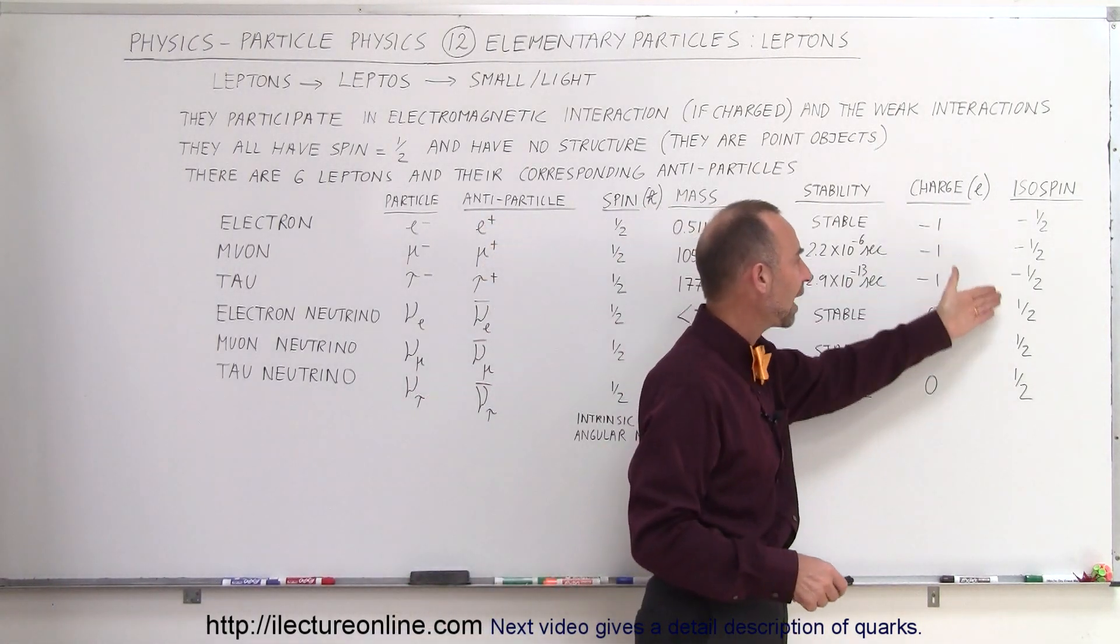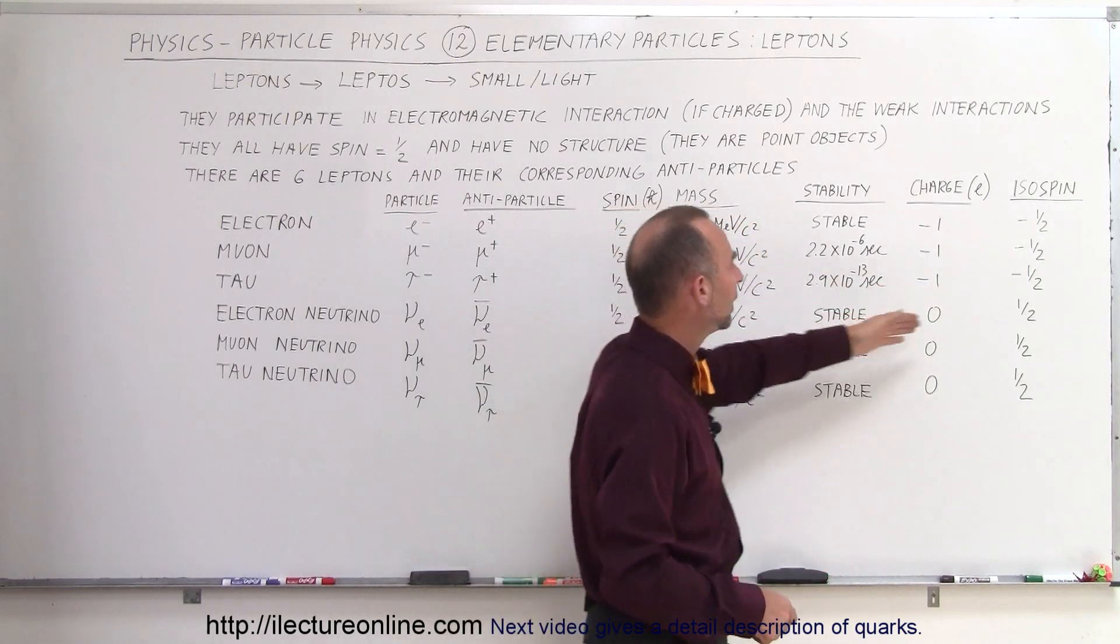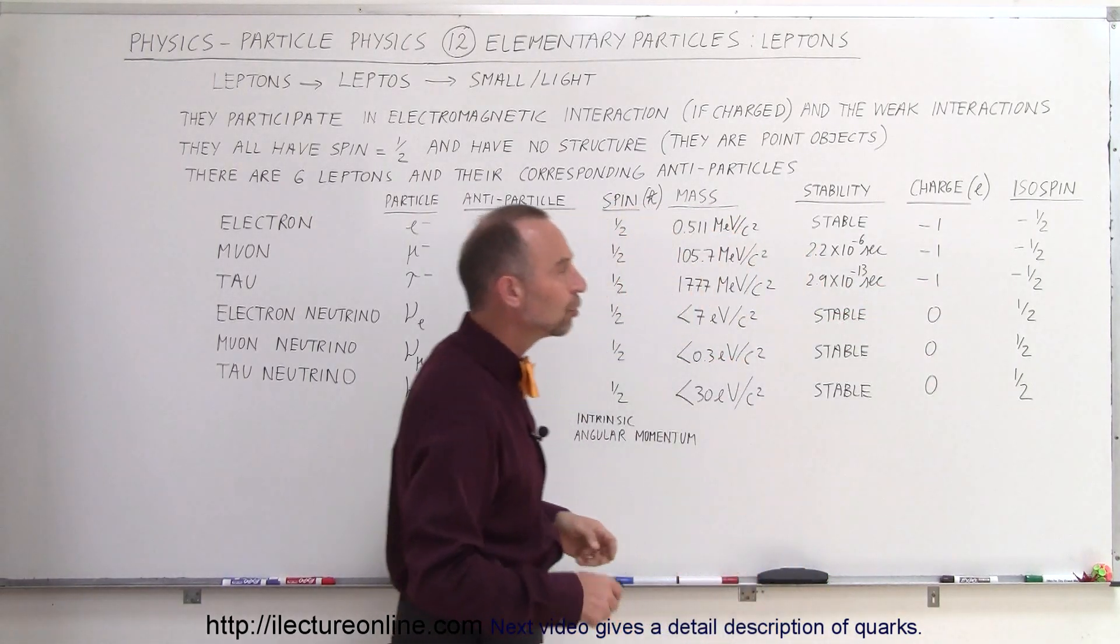Here the isospin is minus one half for the electron, the tau and the muon and they're plus one half for the neutrinos.